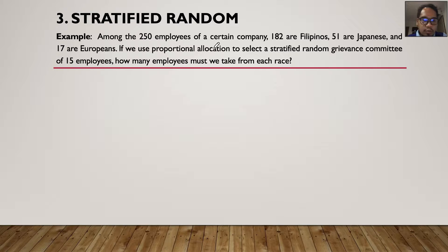So since we're going to make use of proportional allocation, what it means is that our grievance committee, which is composed of 15 employees, must be dominated by the members of the population which has the most number on it. So since Filipinos are 182, and 51 are only Japanese, there must be more Filipinos than Japanese and also than Europeans in this 15-man employee.